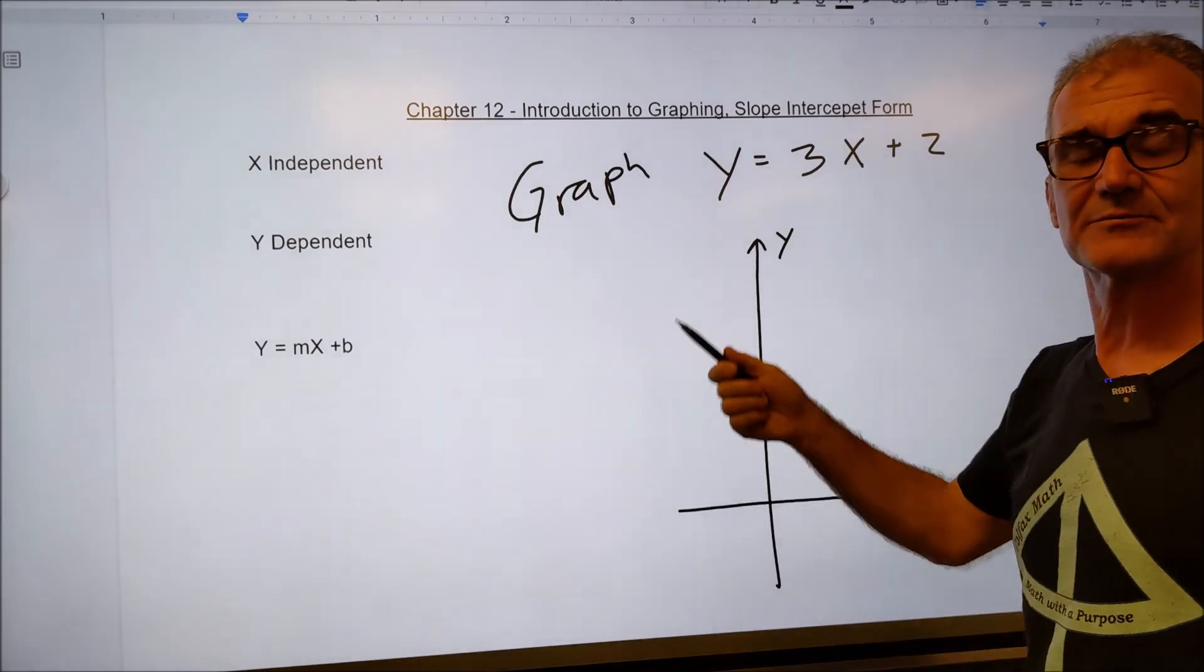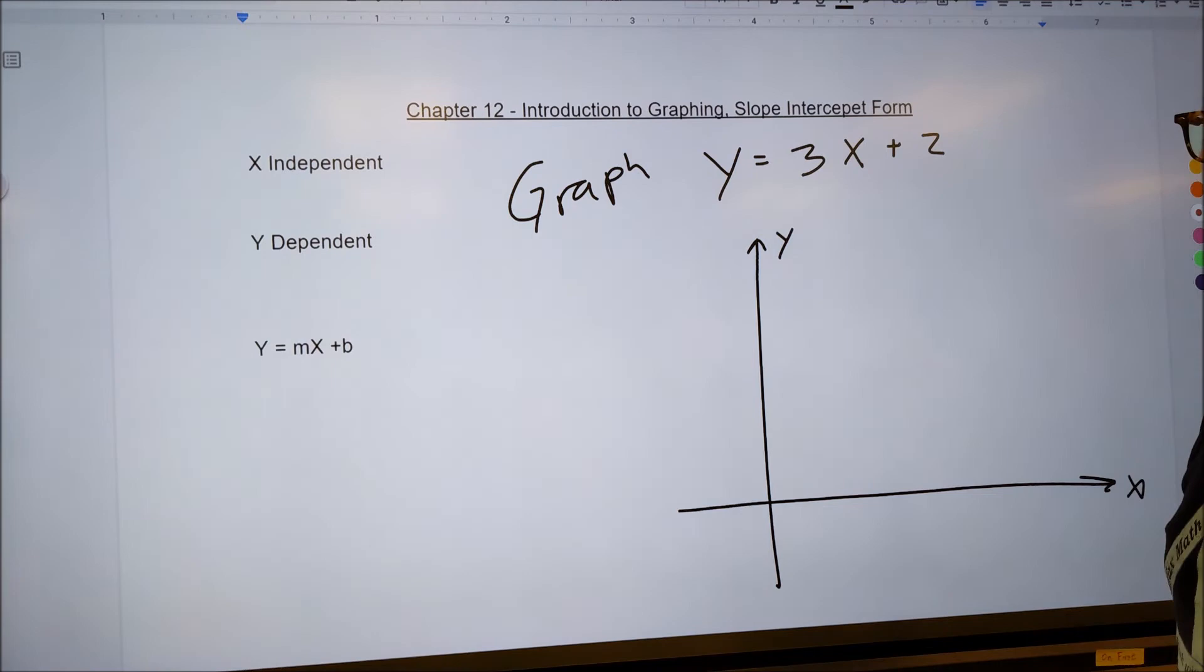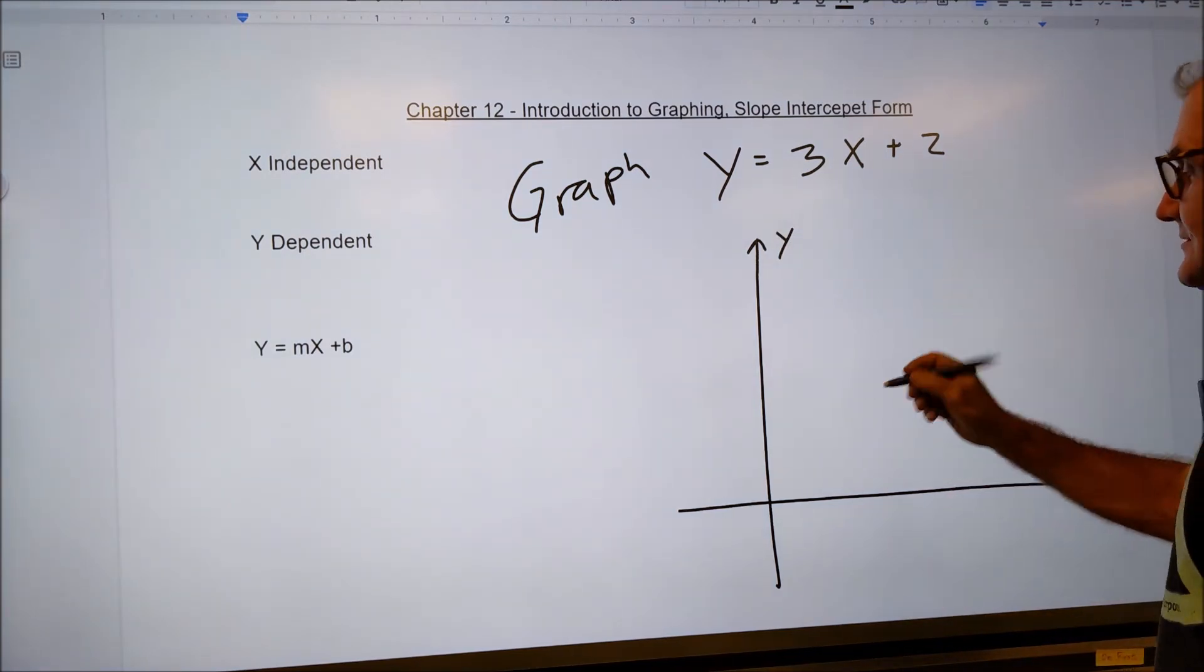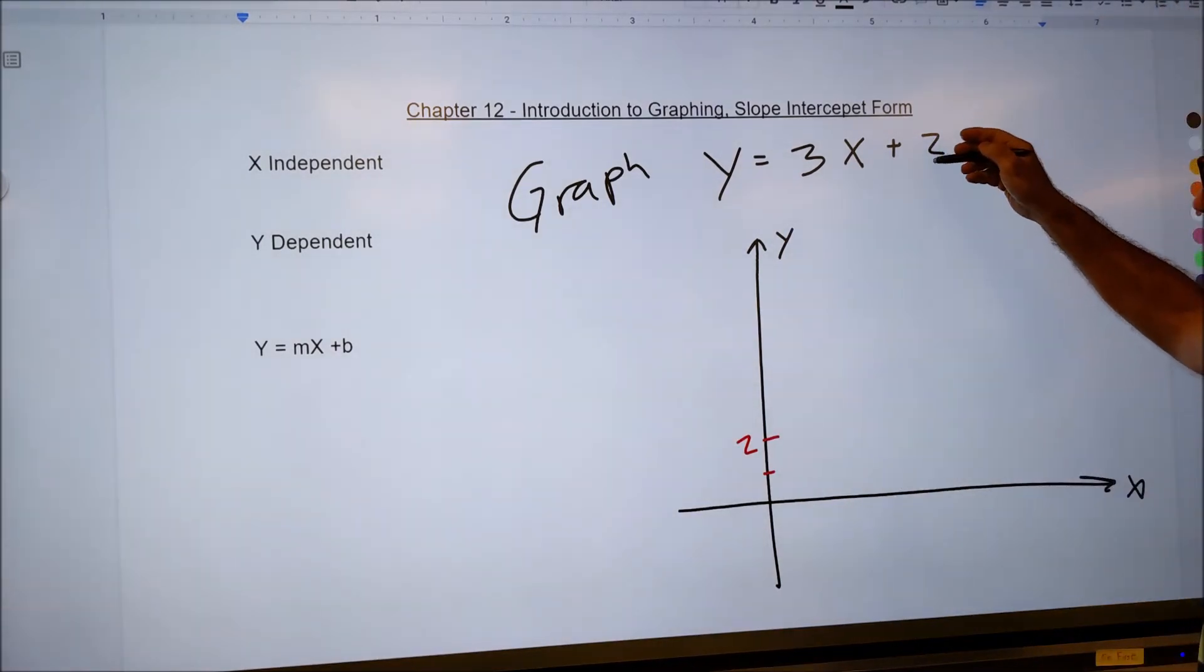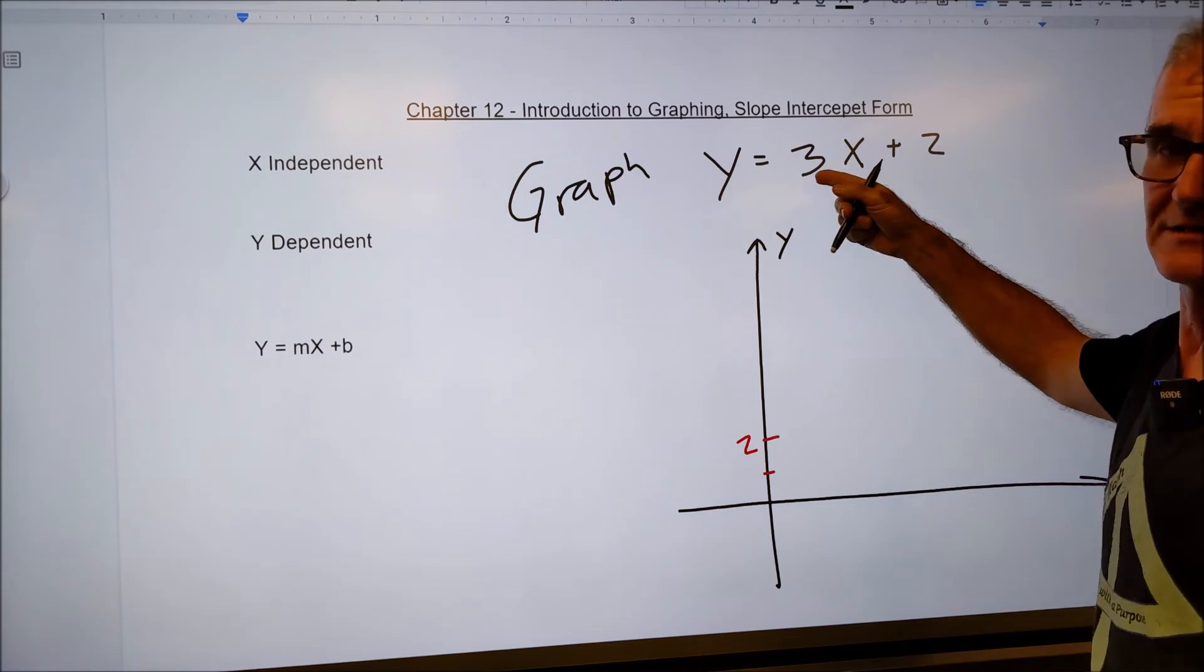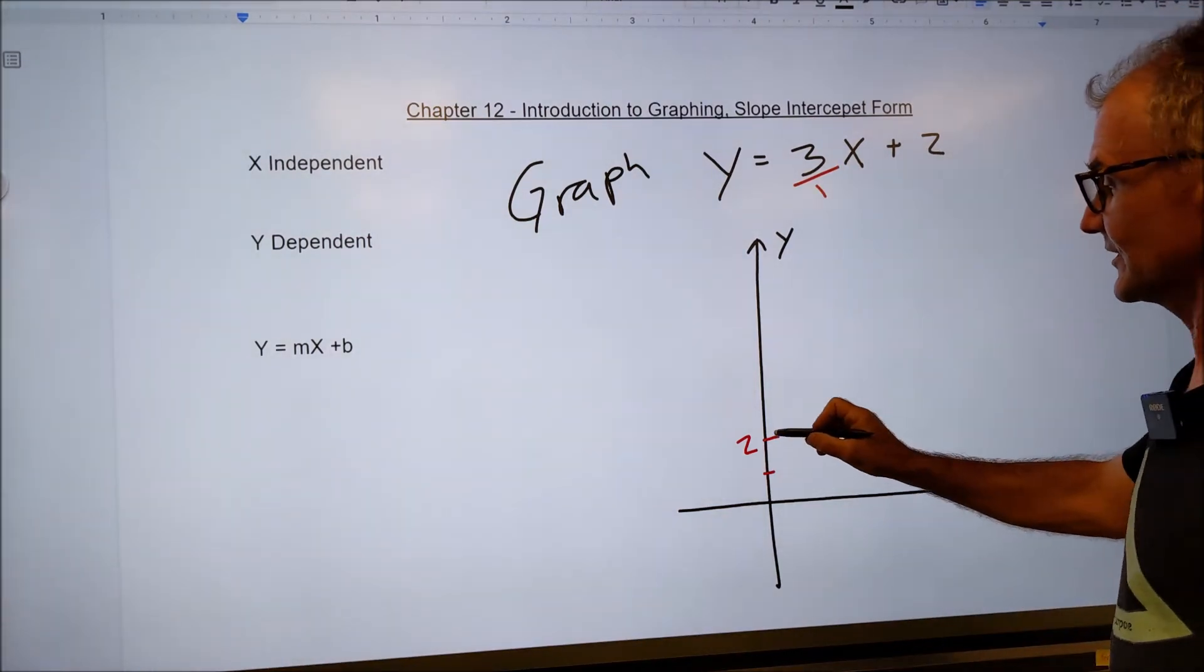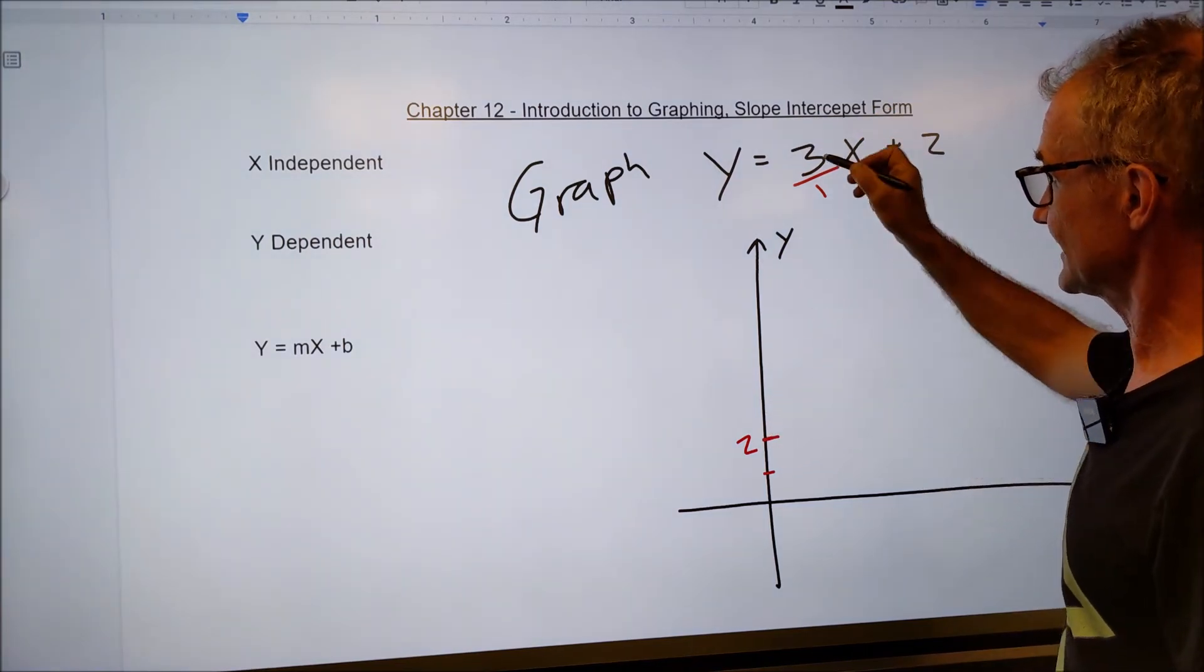All right, here's another problem given an equation. Go ahead and graph that equation. Pause the video and see if you can figure that out. All right, so I got y equals mx plus b. So it's going to cross the y-axis at two. That's my y-intercept. This is a number, but it's also a fraction, three over one. So from two, rise over run, I run one and I rise three.